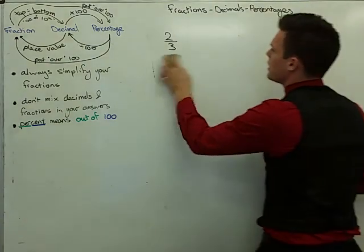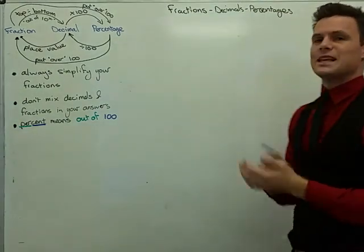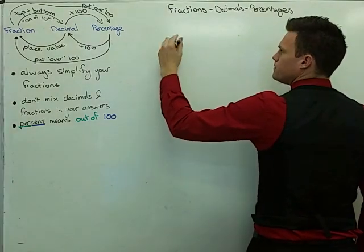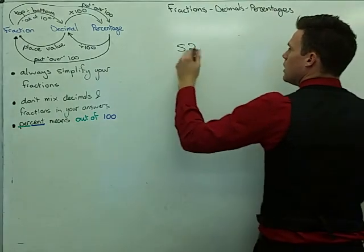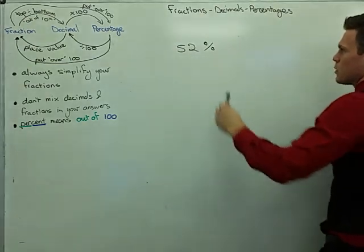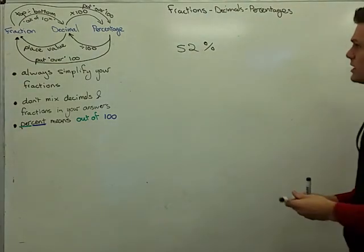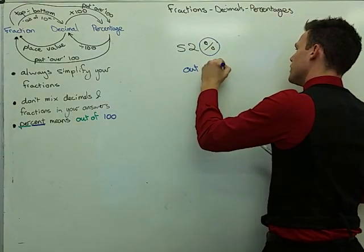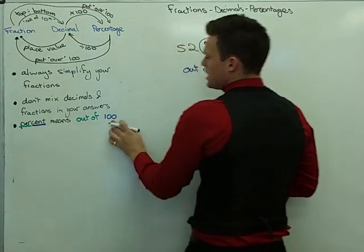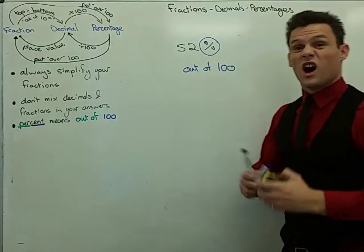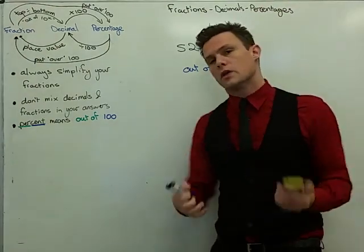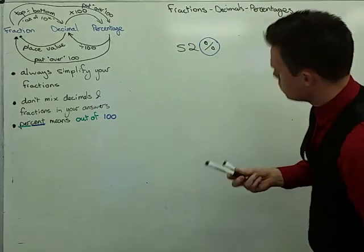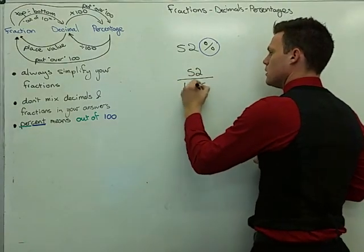So that's converting between fractions and decimals and back. Percentages, to be honest, are the easy one. If you get a percentage and you want to convert to a decimal, it's pretty easy. Let's say I had 52% — I've got 52% for my test and I want to know out of a hundred, how much is that? That's really easy, because this percentage sign means out of one hundred. 'Percent' — per means out of, cent comes from the Latin for a hundred, same root as the word century — a hundred years. So 52% means 52 out of one hundred.